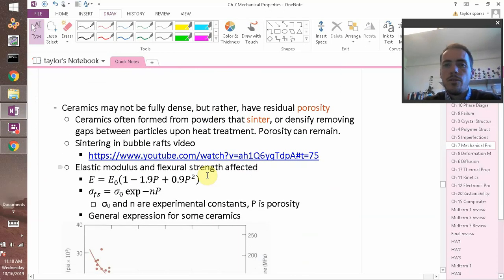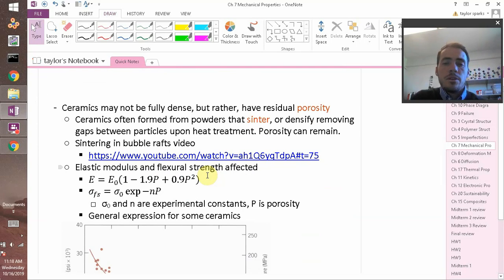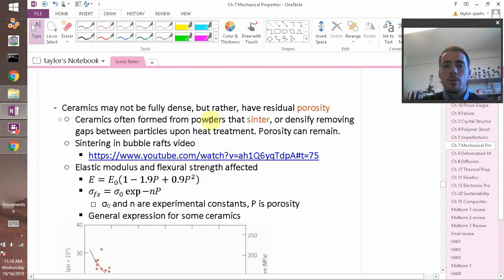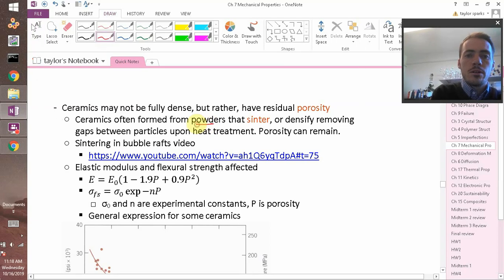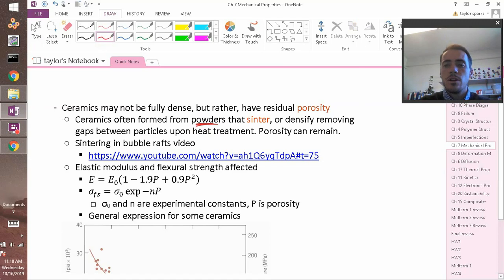So when ceramics are fully dense, you can get one set of properties, but it's very common to get ceramics that are not fully dense. This is because they have residual porosity left over. Why? Well, when you make ceramics, you start with powders, usually. There's other ways to do it, but it's common to start with powders, and then you sinter these together. So the particles slowly come together. We call this process sintering, and this is the densification going from particles to now some dense body.